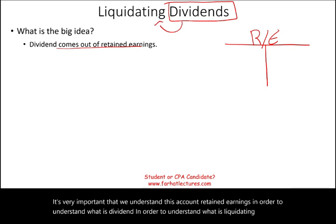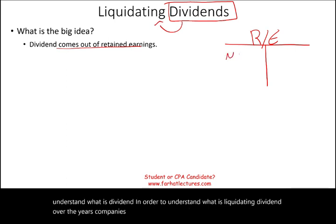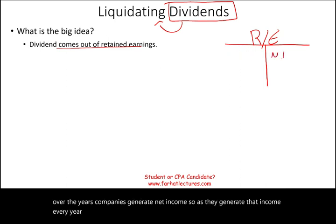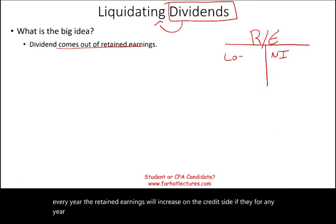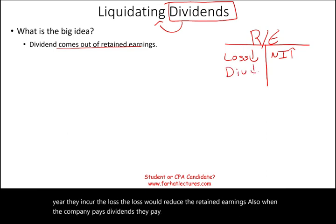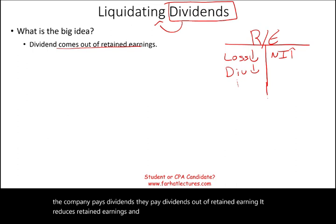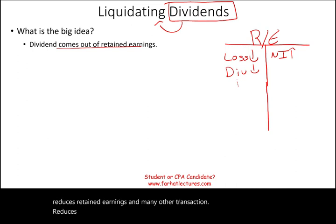Over the years, companies generate net income. As they generate net income every year, the retained earnings will increase on the credit side. If for any year they incur a loss, the loss would reduce the retained earnings. Also, when the company pays dividend, they pay it out of retained earnings, which reduces retained earnings. The only thing that technically increases retained earnings is net income.